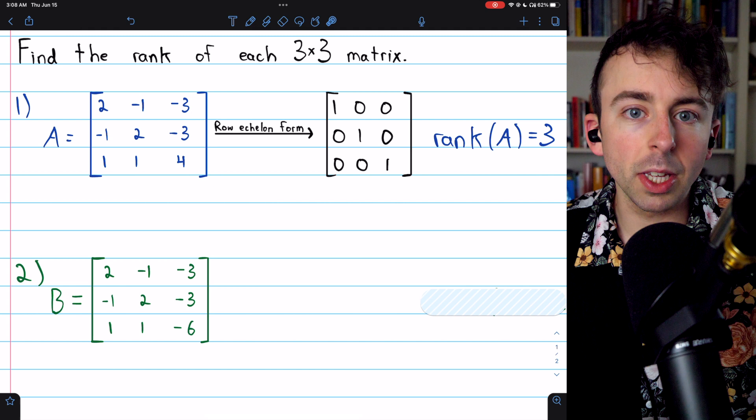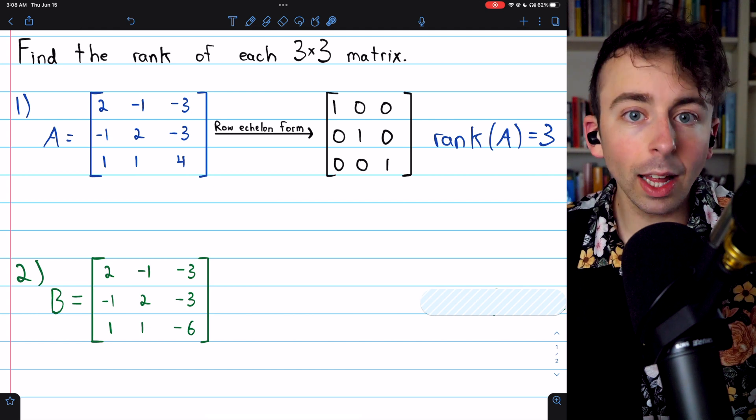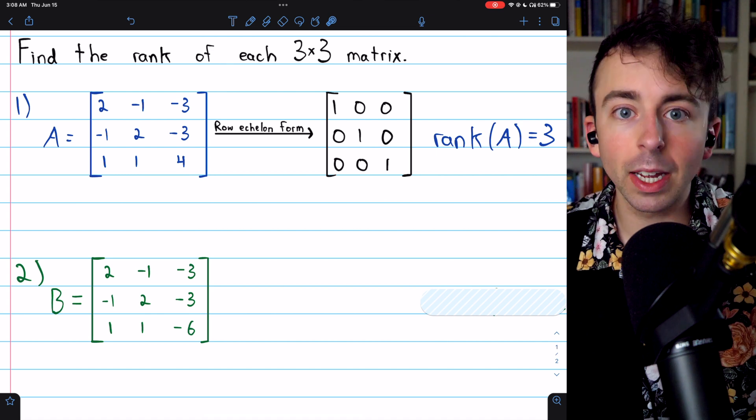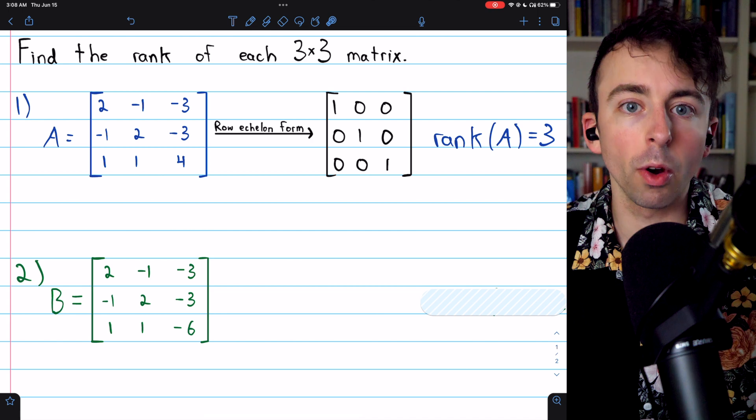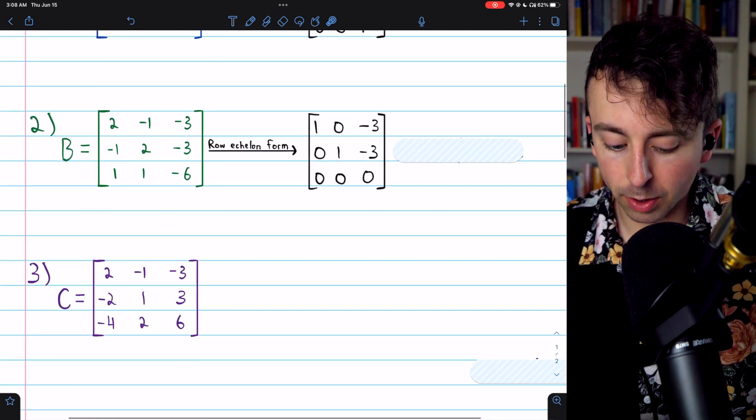If you're not comfortable yet with transforming a matrix to its row echelon form or reduced row echelon form, I'll leave links in the description to my lessons on how to do that. The third example in this video, we will actually perform the operations so you can see how we're doing it. Moving on to example two,